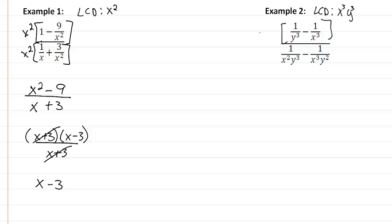So I'm going to multiply it by x cubed y cubed, and so that's going to leave me with x cubed minus y cubed.